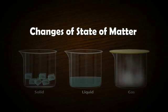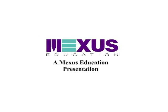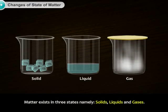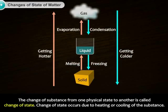Changes of State of Matter. Matter exists in three states, namely solids, liquids and gases. The change of substance from one physical state to another is called change of state. Change of state occurs due to heating or cooling of the substance.